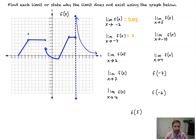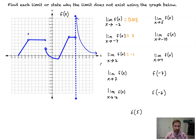The limit as x approaches 2 of f(x): as we approach from the left and from the right side, we end up approaching the same exact y value of negative 1, so the limit is negative 1.